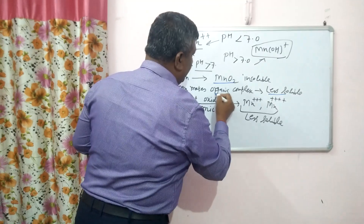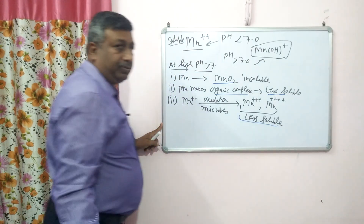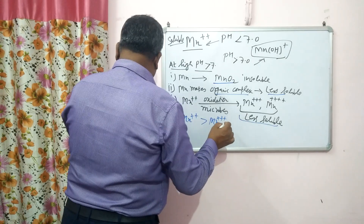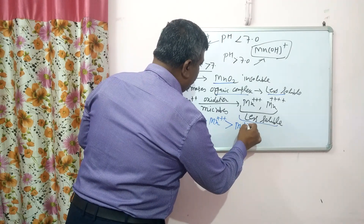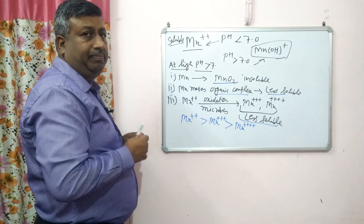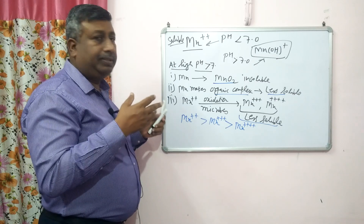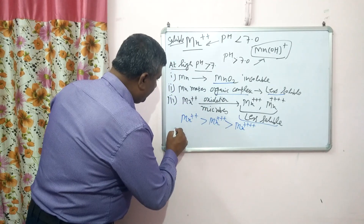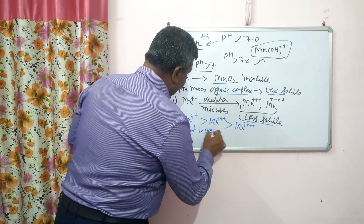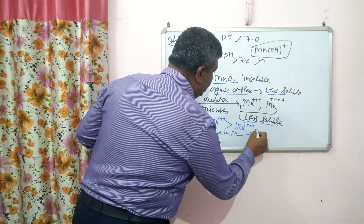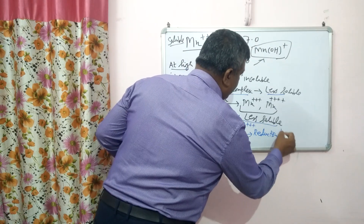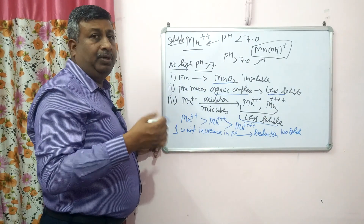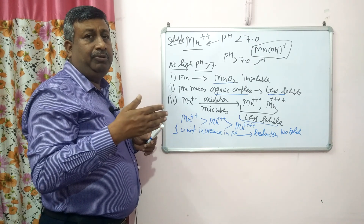Mn²⁺ is more soluble than the trivalent form, and the trivalent form is more soluble than the tetravalent MnO₂ form. It is observed that a one unit increase in pH causes a 100-fold reduction in manganese availability. So, if pH is increased from 6 to 7, manganese availability is reduced 100 times.